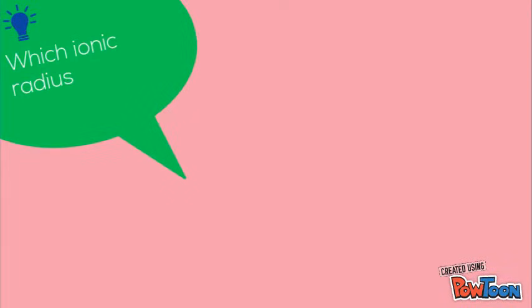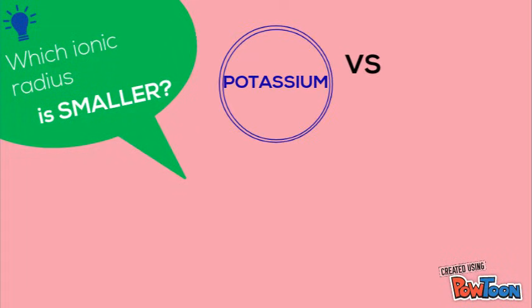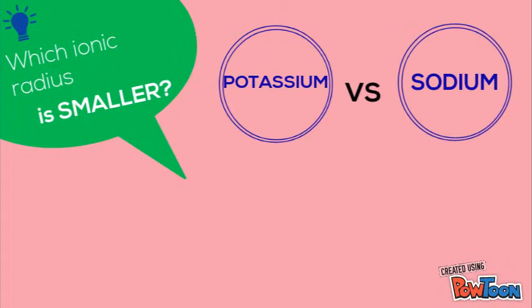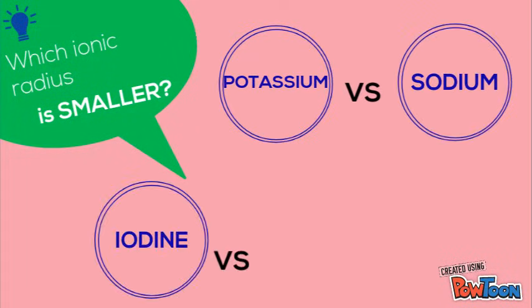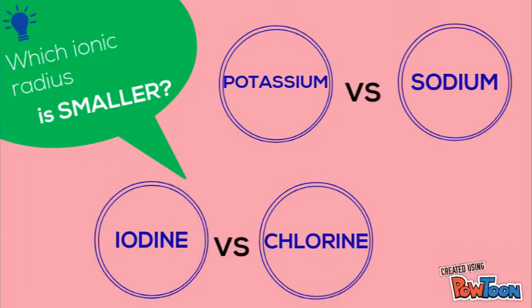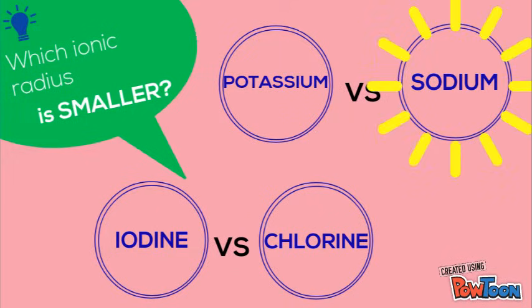Now knowing this trend, which ionic radius do you think is smaller? Potassium or sodium? Iodine or chlorine? Pause the video until you have an answer. If you think the sodium ion is smaller, you're correct. If you think the chlorine ion is smaller, you're correct.